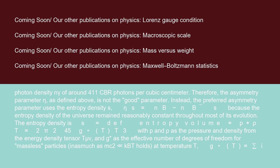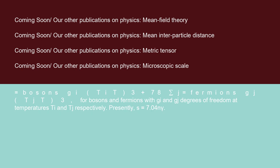At temperature T, g*(T) = Σᵢ(bosons) gᵢ(Tᵢ/T)³ + (7/8)Σⱼ(fermions) gⱼ(Tⱼ/T)³, for bosons and fermions with gᵢ and gⱼ degrees of freedom at temperatures Tᵢ and Tⱼ, respectively.